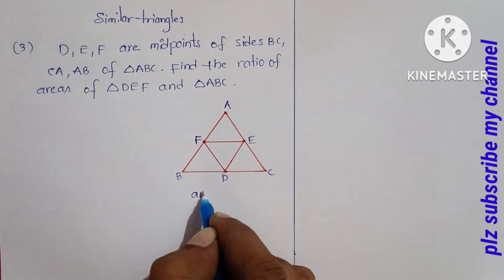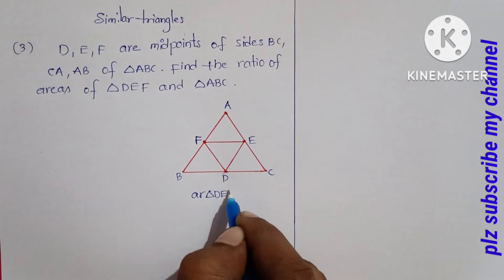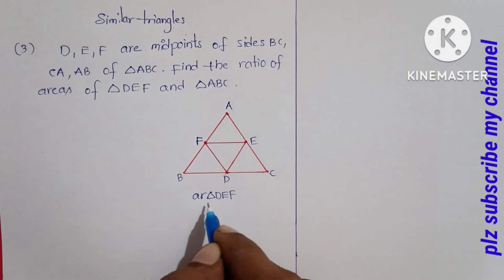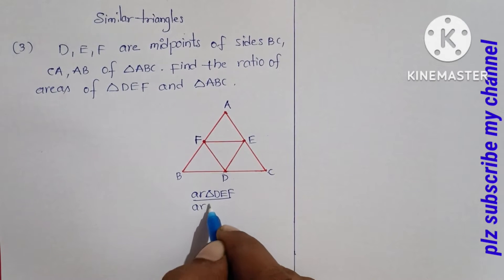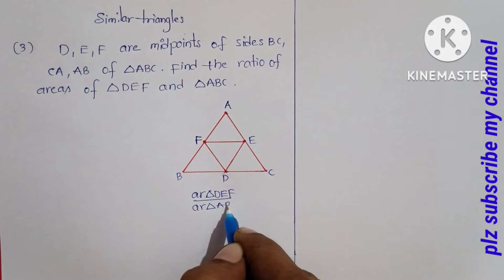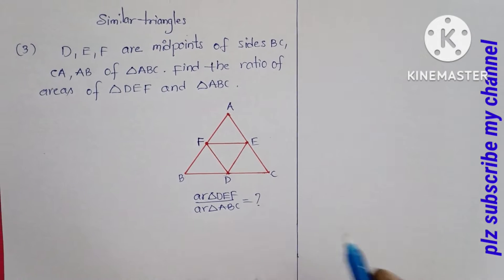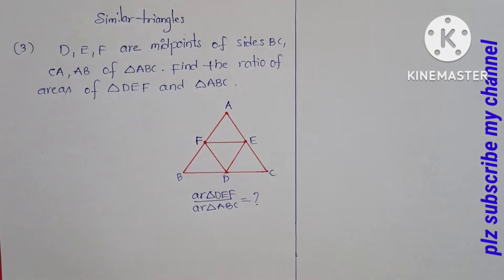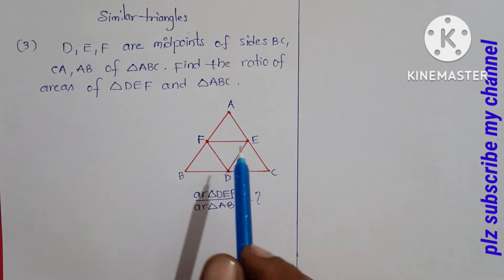Area of triangle DEF to area of triangle ABC — we need to find this ratio.